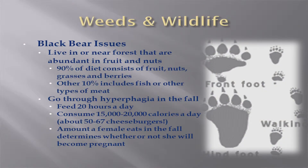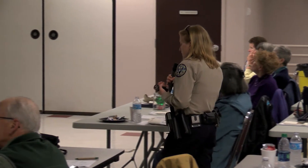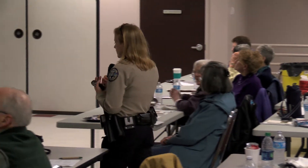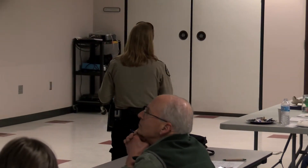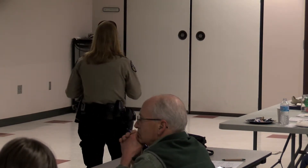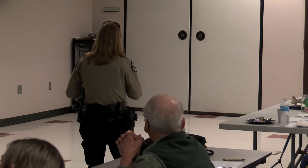I picked black bears to talk about because it's one of my favorite subjects. They live in or near forests that are abundant in fruit and nuts. About 90% of their diet consists of fruit, nuts, grasses, and berries — depending on the time of year. About this time of year they're eating grasses because they're coming out of torpor. It's not technically hibernation — it's torpor. When they come out, they feed off grasses right away, partly because they have a fecal plug they're trying to pass and need fiber.